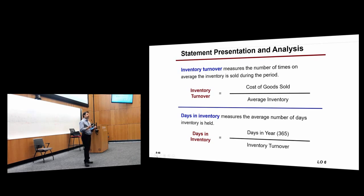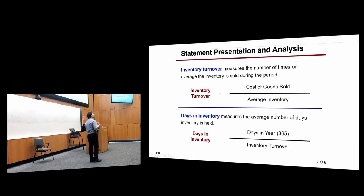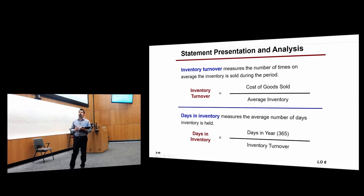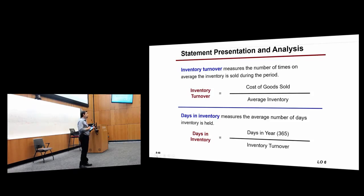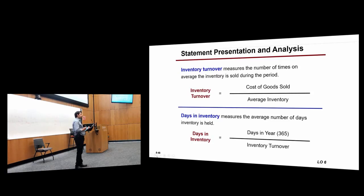You divide cost of goods sold by average inventory — not ending inventory. Average inventory is beginning inventory plus ending inventory over two. You need to take both inventory figures into account. Unless there are large seasonal effects on your sales, it should be a good approximation.